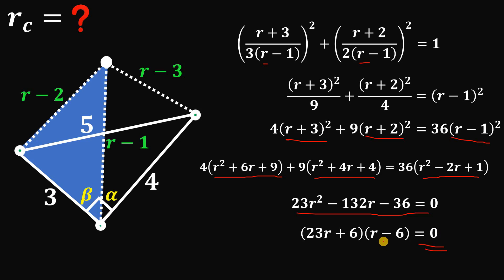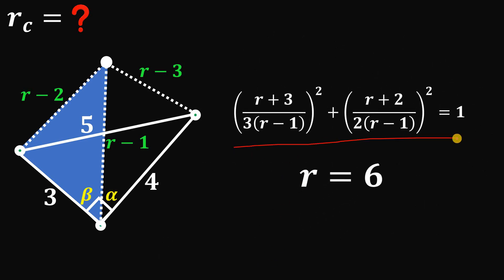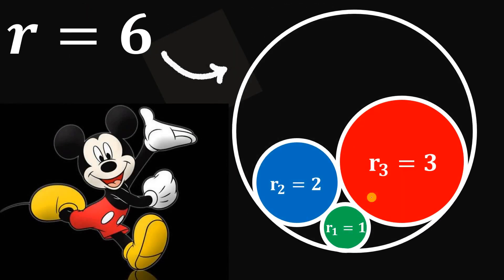Factoring gives (23R plus 6)(R minus 6) equals 0, so R equals negative 6 over 23 or R equals positive 6. Since R cannot be negative, the only valid solution is R equals 6. Therefore, the radius of the big circle in this Mickey Mouse puzzle is 6 units. And as always, we are done.